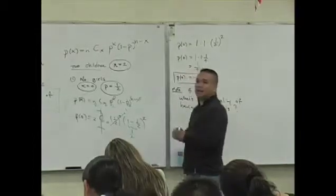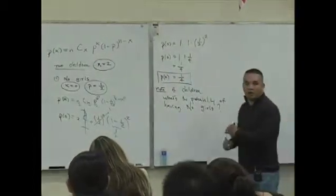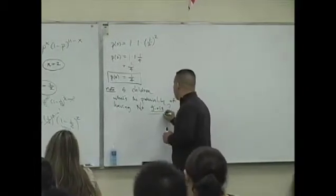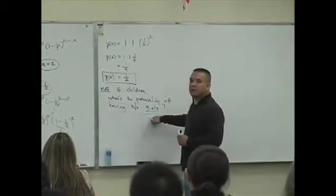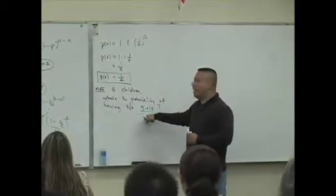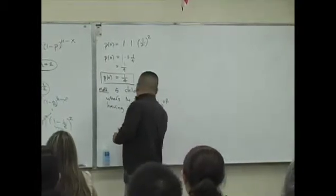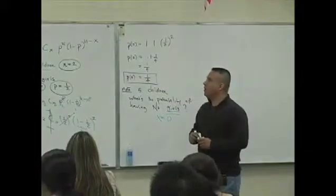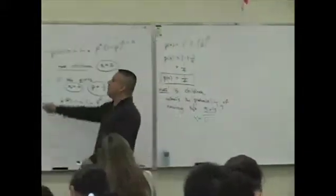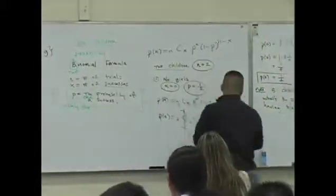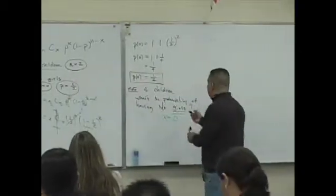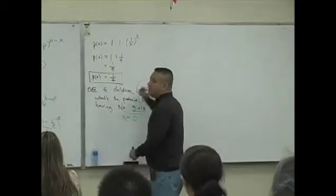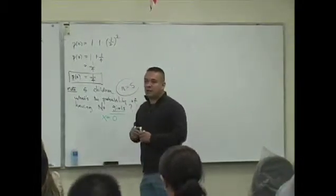Didn't we say let the success be what's in the question? Having girls - that's our success. So having no girls still means x is 0. If we look at this from a five children perspective, the only thing that changes is the value of n - here it's 5.